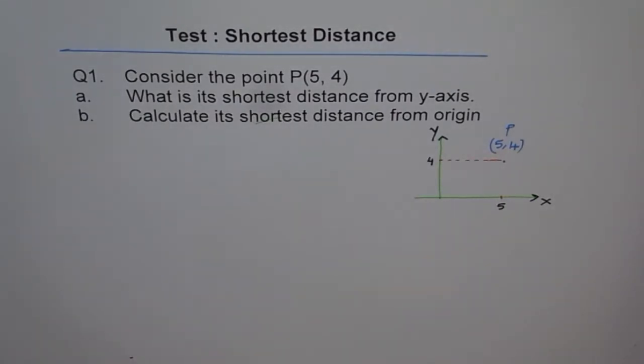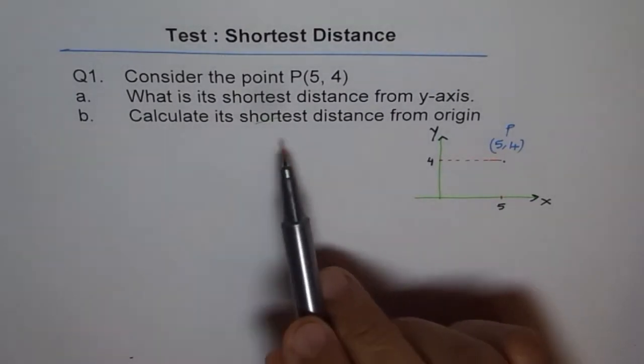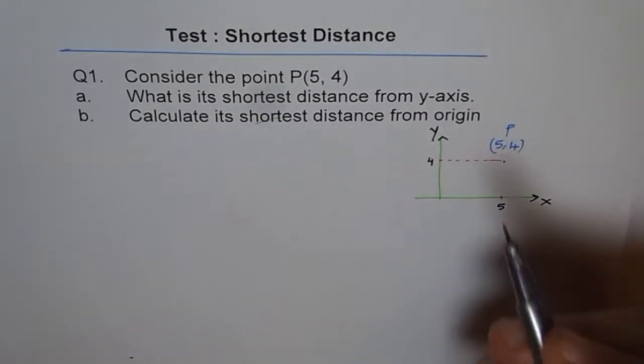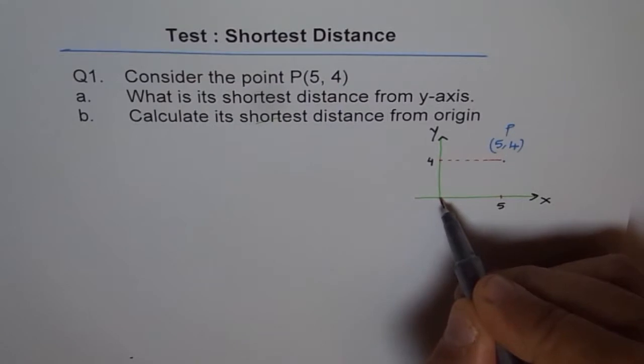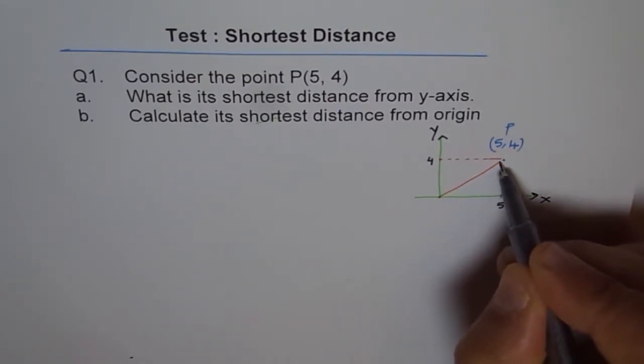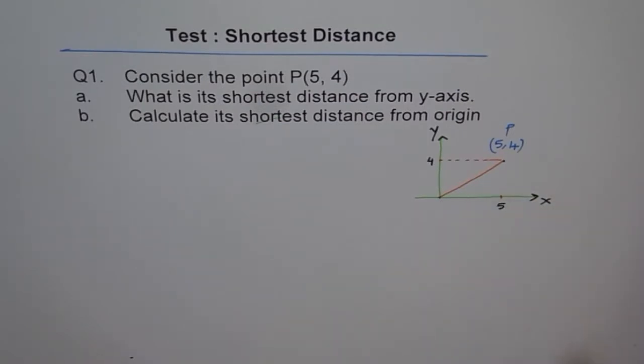Now let's do part b. Part b says calculate distance from origin. Now it is not the shortest—I mean that word doesn't have any meaning here. So you have to join origin with this point. So this makes a kind of a right angle triangle, do you see?